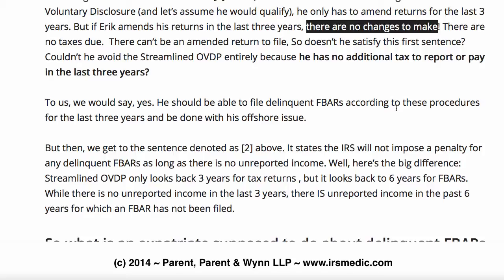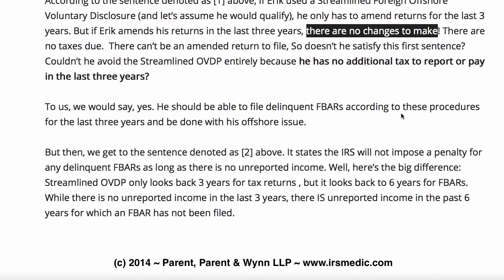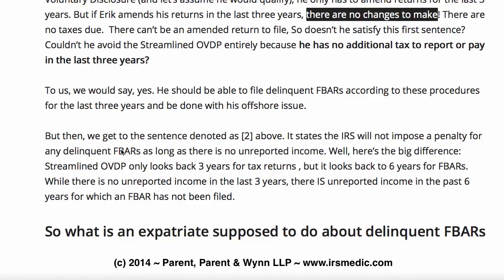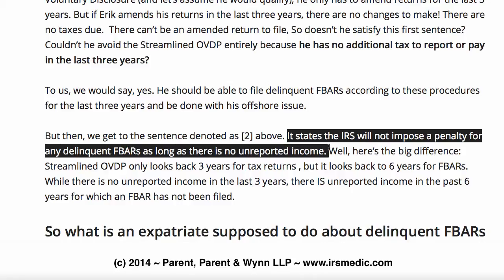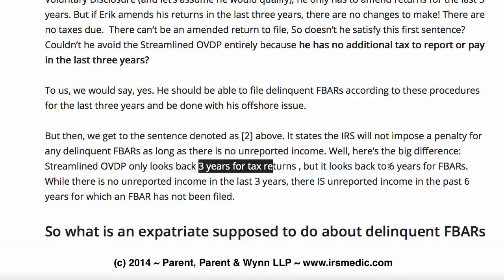To us, we'd say yes — you should be able to file delinquent FBARs according to these procedures for the last three years and be done with the offshore issue. But then you get to the issue of sentence two above, which states: the IRS will not impose a penalty for any delinquent FBARs as long as there's no unreported income. Here's the big difference: the streamlined OVDP looks back three years for tax returns but six years for FBARs. So while there is no unreported income in the last three years, there is unreported income in the last six years for which an FBAR should have been filed.